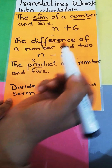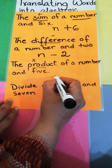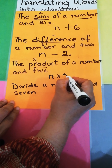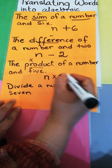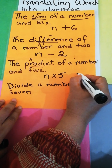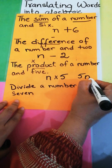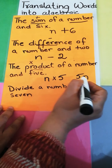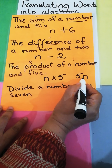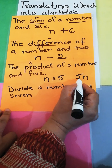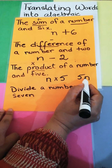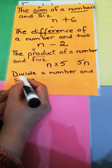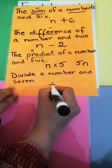The product of a number and five. 'Product' means multiply. In algebra, we write the number first and the letter later — for example, 5n. There is no need to write the multiplication sign in algebraic expressions; if there is no sign between them, it automatically implies multiplication.